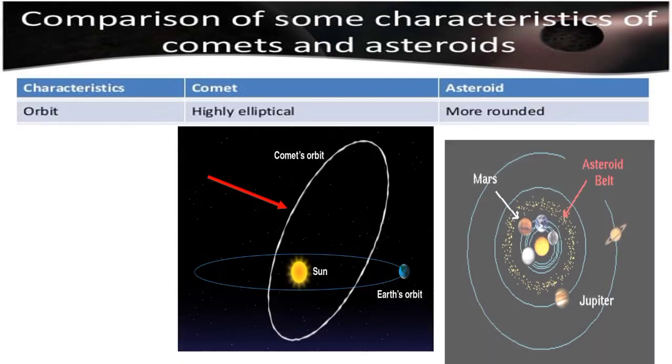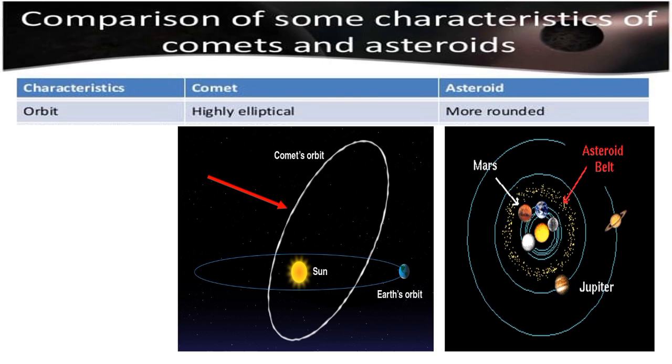Comets' orbits are highly elliptical. While asteroids have a more rounded orbit.